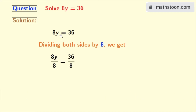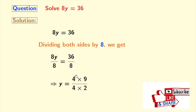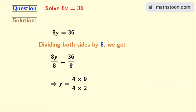Doing so, we get 8y by 8 is equal to 36 by 8. In the left hand side, 8 gets cancelled and we are left with y. And in the right hand side, we will rewrite 36 as 4 times 9 in the numerator and in the denominator we have 8, and we will rewrite it as 4 times 2. So look that here, 4 gets cancelled and we are left with 9 by 2.